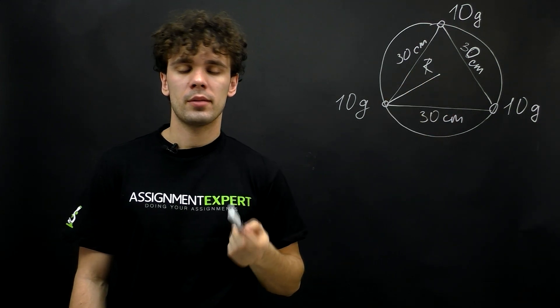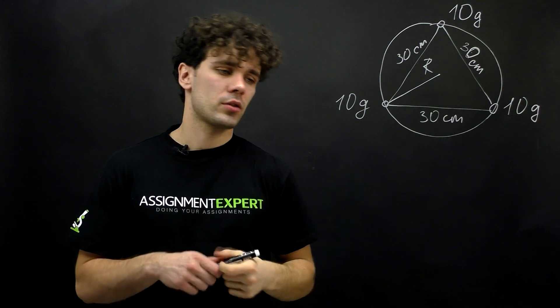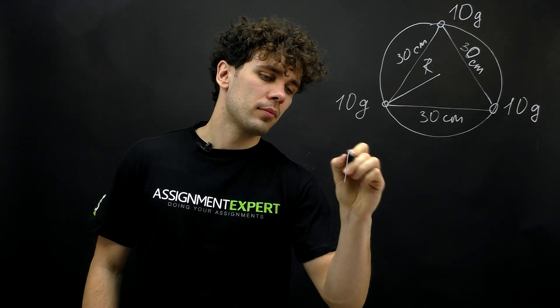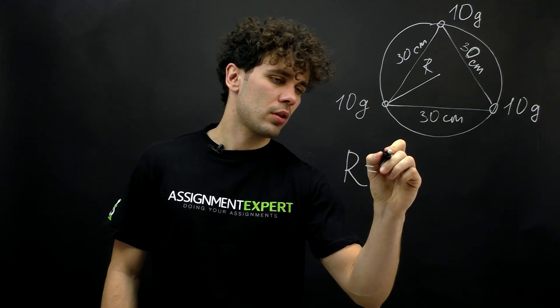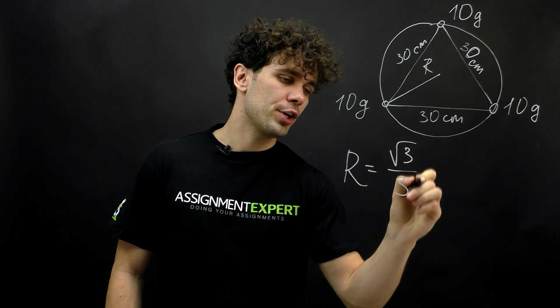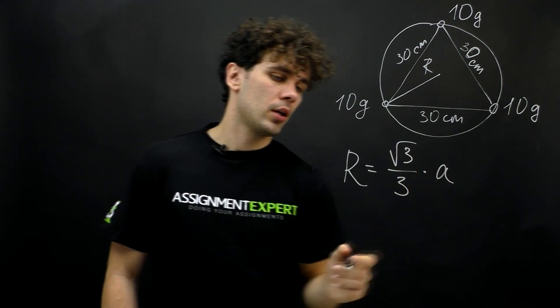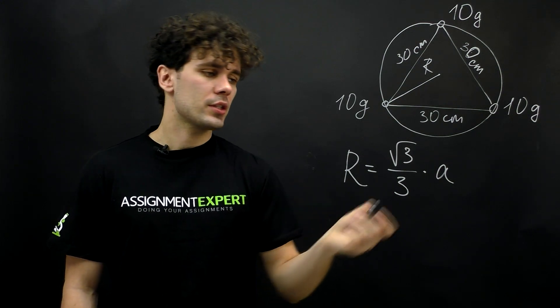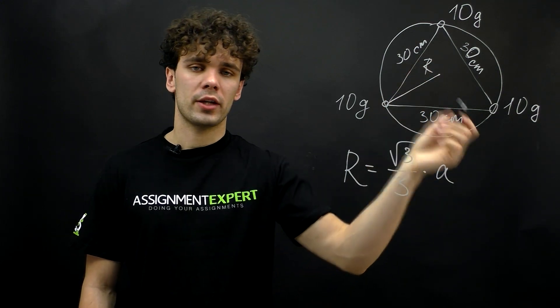And luckily there is a simple formula to find this radius. R equals the square root of 3 over 3 times a, where R is the circumradius and a is the side of the equilateral triangle.